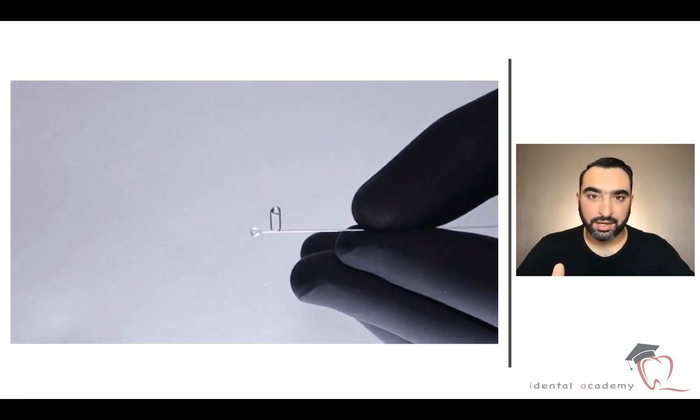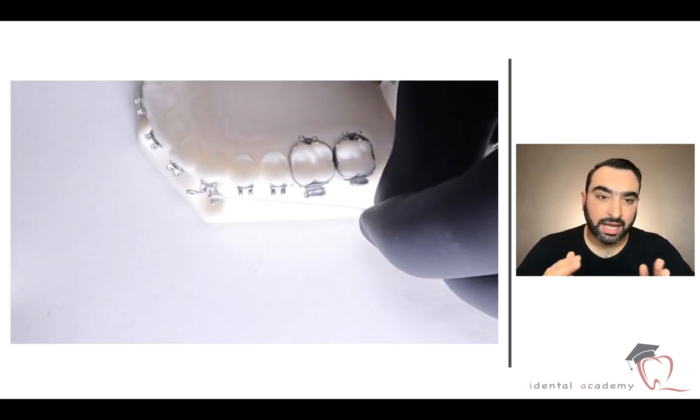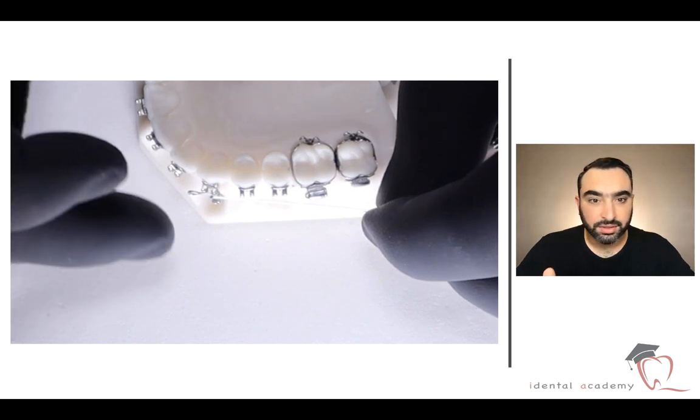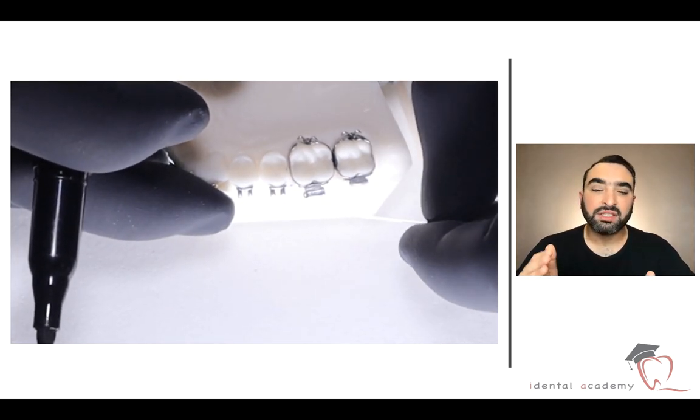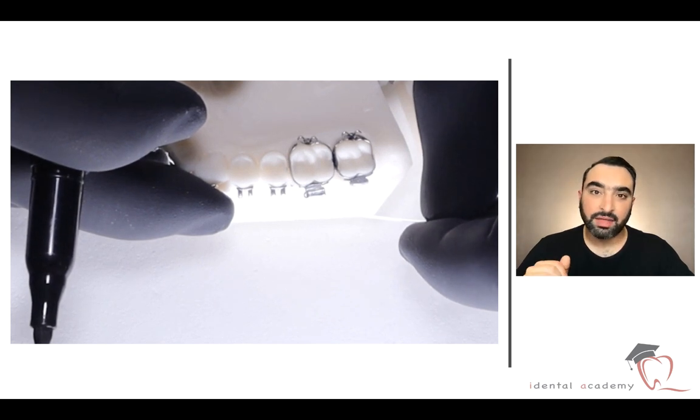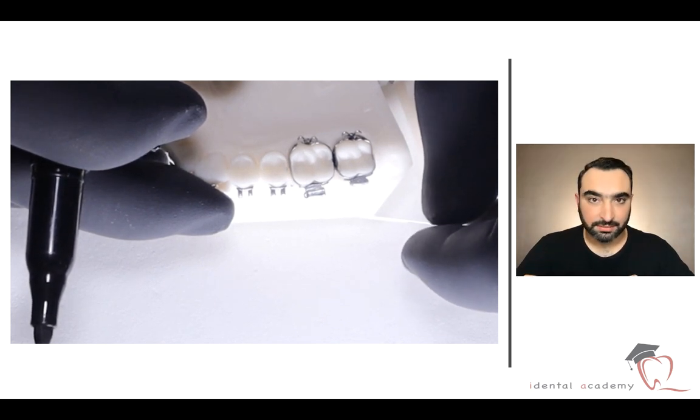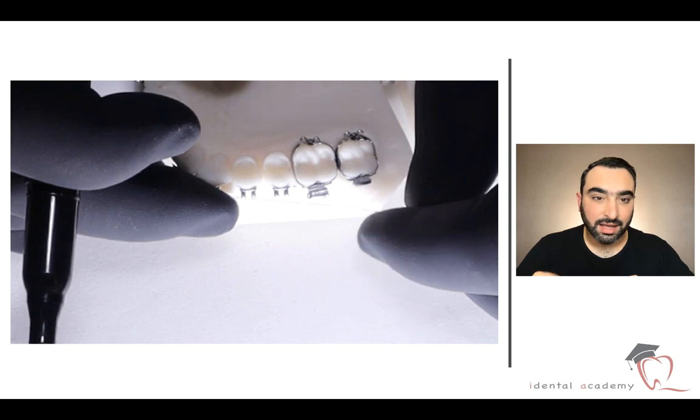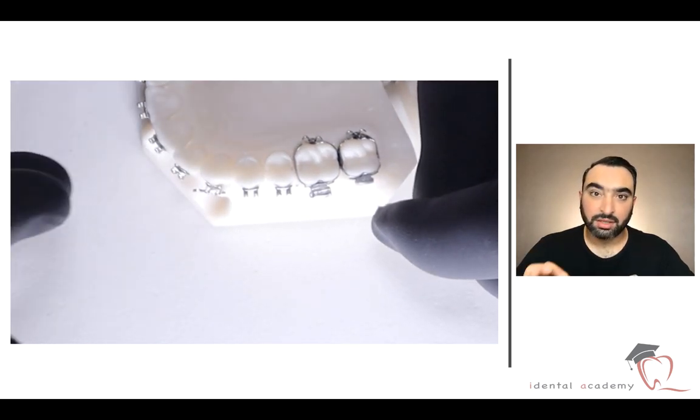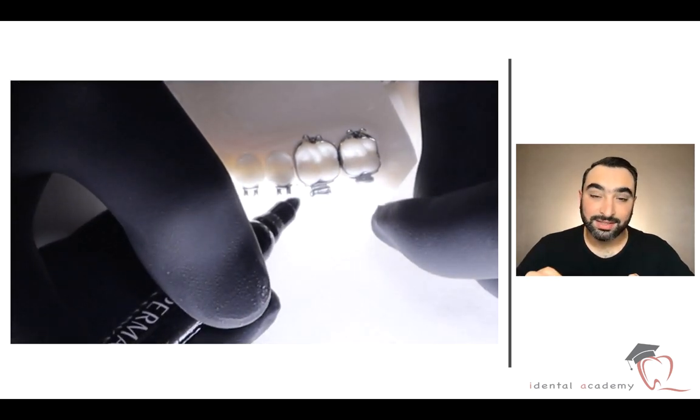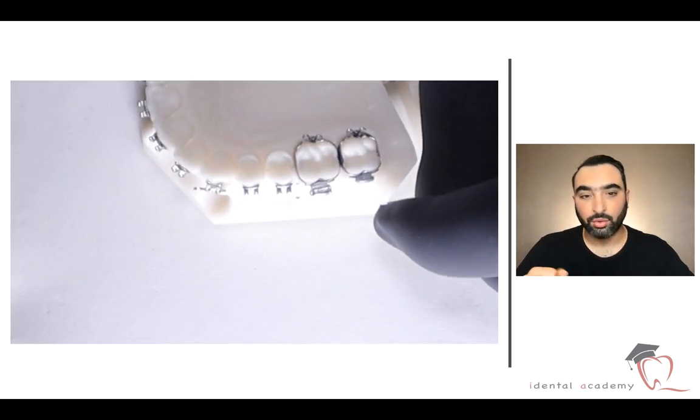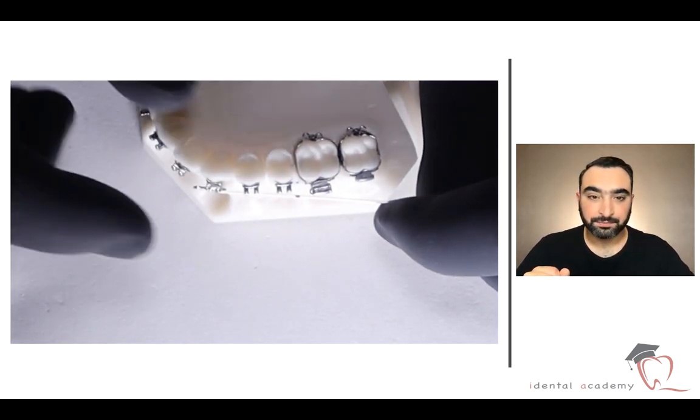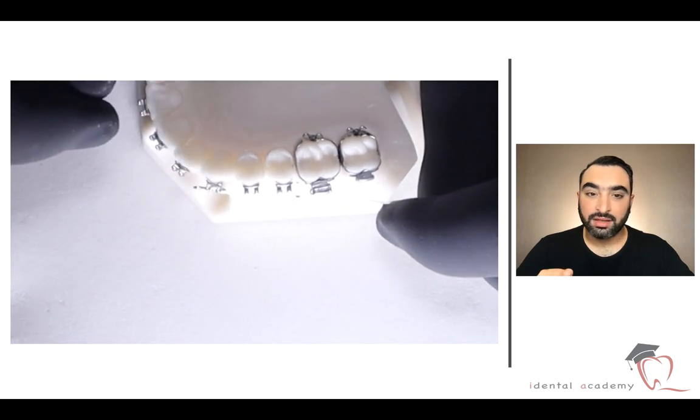Actually the sectional retraction wire has two parts: anterior part we already done, and posterior part. The posterior part starts after second premolar, mesial of the buccal tube or the band. Usually I use band with this kind of sectional retraction wire because it needs activation, and sometimes the buccal tube will be broken while you are activating.